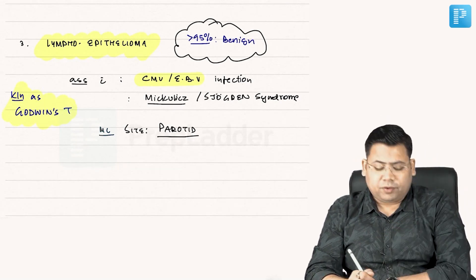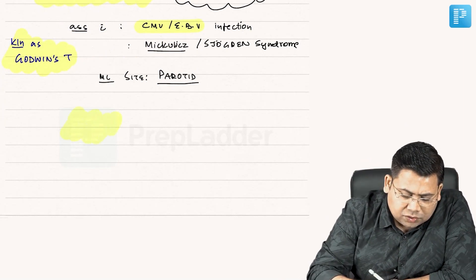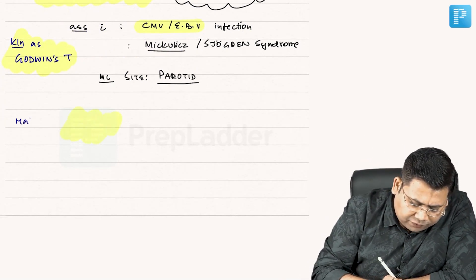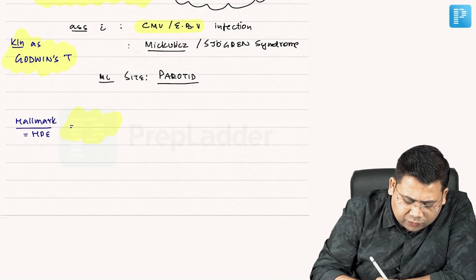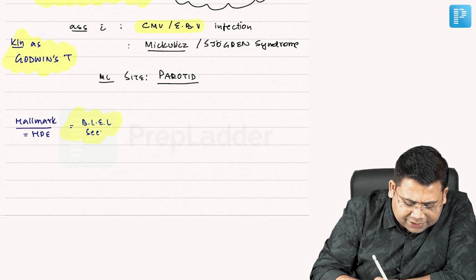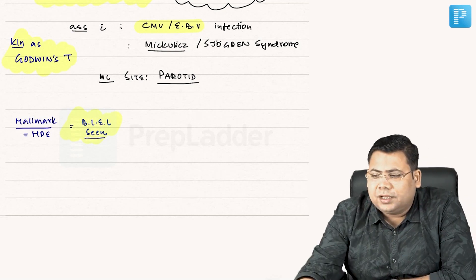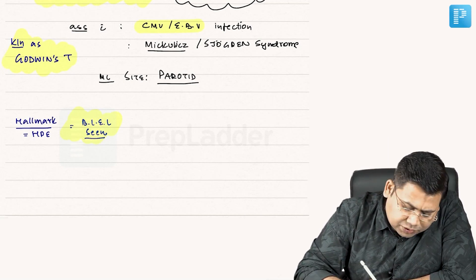More than 95% are benign. The hallmark feature is seen on HPE — on histopathological examination, you get to see BLEL (B-L-E-L). So, BLEL is seen.